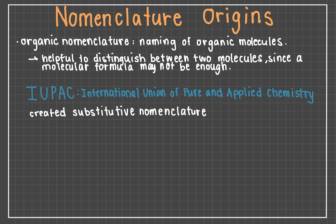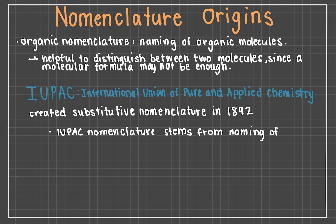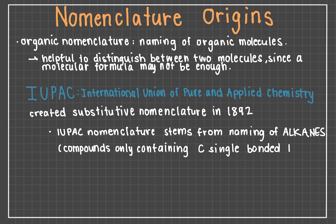Learning IUPAC nomenclature and all of the rules within it can seem daunting at first, but we will try to unpack them in a way that makes it easier to comprehend. Substitutive or IUPAC nomenclature stems from the naming of alkanes, which are compounds that contain only carbon atoms single-bonded to hydrogen atoms. Understanding the ins and outs of alkane nomenclature first will help make other naming processes seem much simpler. Again, this may seem like a different language, but with time, nomenclature will become second nature.